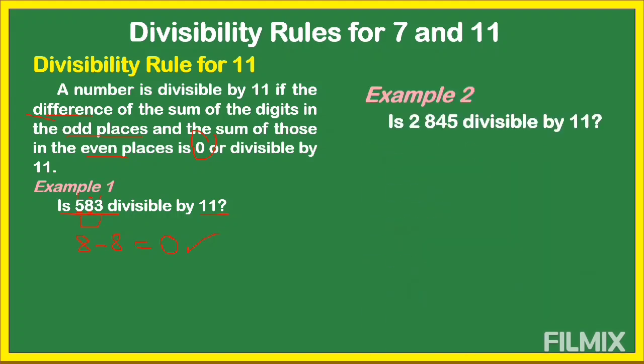Another example: is 2,845 divisible by 11? We have four digits, so we pair them. Odd places give us digits 5 and 8, with a sum of 13. Even places give us digits 4 and 2, with a sum of 6. The difference is 13 minus 6 equals 7. Since 7 is not 0 and is not divisible by 11, 2,845 is not divisible by 11.